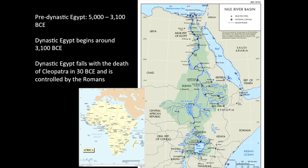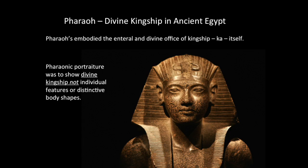Eventually, Egypt would become a veritable melting pot of Sub-Saharan Africans, North Africans, Mesopotamians, and eventually Greeks and people from the Mediterranean. But the pharaohs were, for a large part, Black Africans. The pharaoh — divine kingship in ancient Egypt.